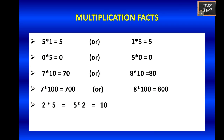Next we are going to see multiplication facts. When you multiply a number with 1, you will get the same number — for example, 5 into 1 or 1 into 5 equals 5. Whenever you multiply a number with 0, you will get the answer as 0 — that is, 0 into 5 or 5 into 0 is 0.